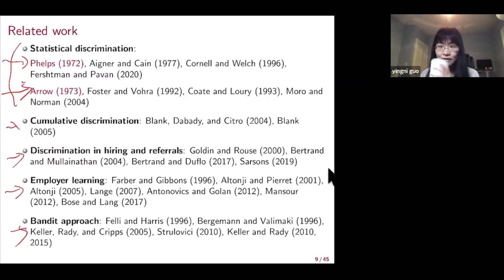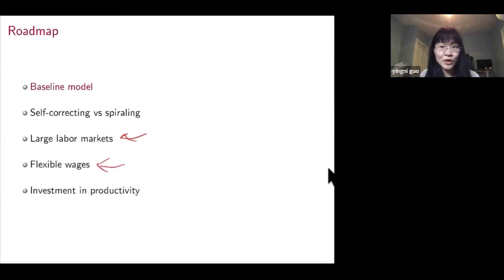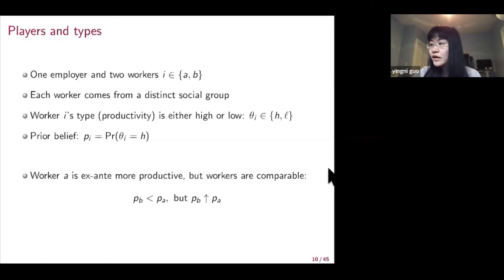I'll begin with a simple model of one employer and two workers as an illustrating example, and later talk about what happens when there are many workers from each group and many employers. For this baseline model, we have one employer and two workers — worker A and worker B — who come from different social groups. We can think of A as a man and B as a woman. Worker i's type or productivity is either high or low. I use theta-i to denote worker i's type, H represents high type, and L represents low type.